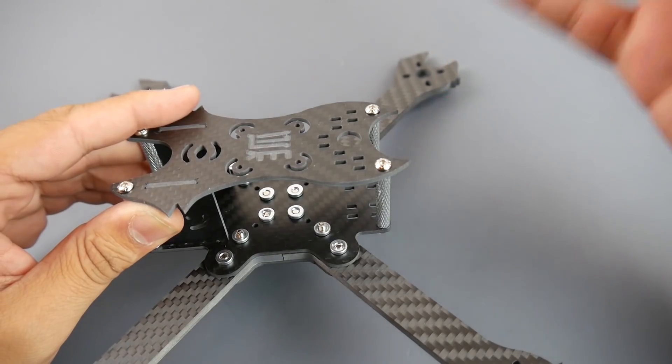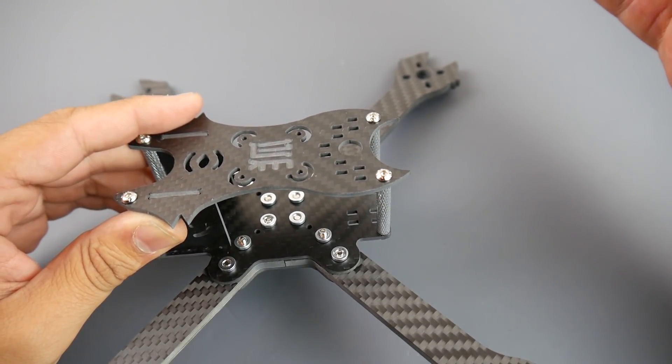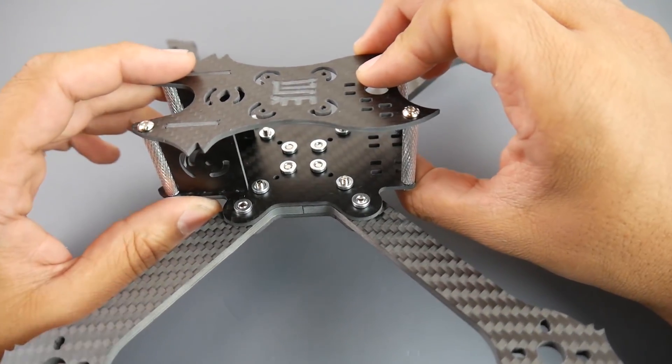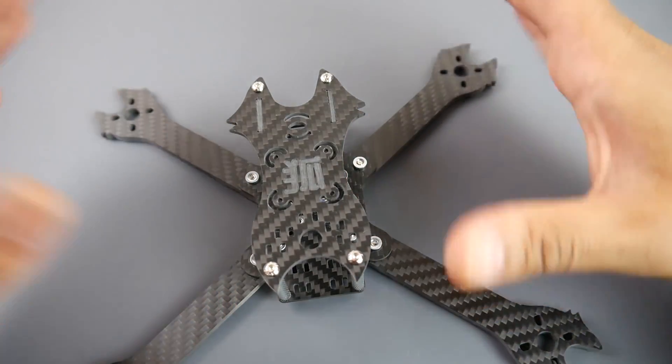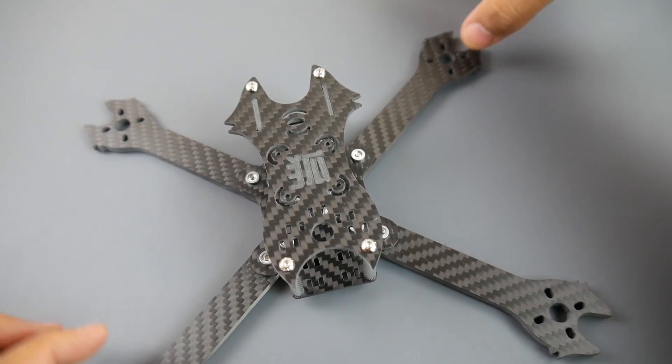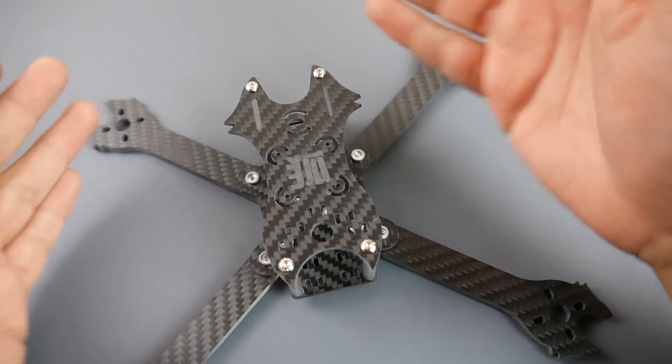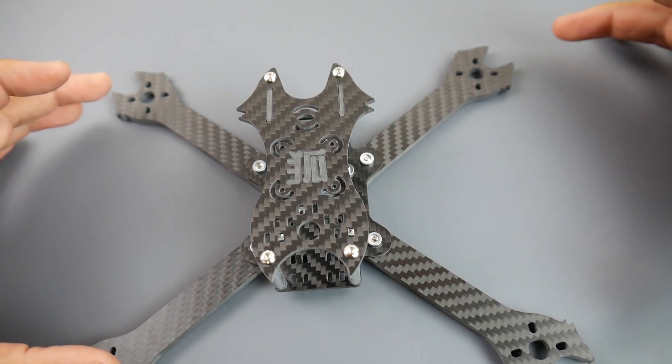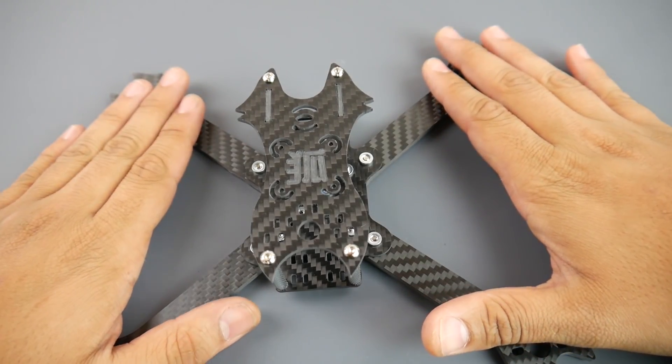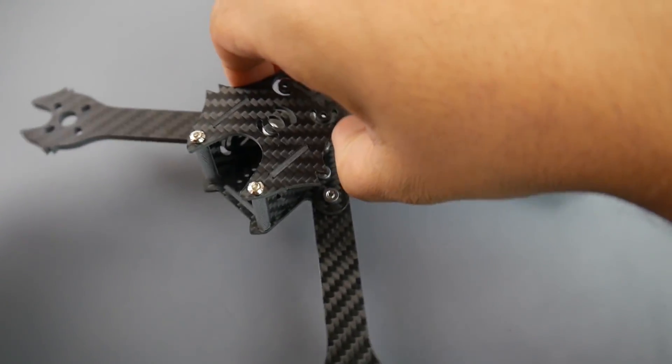This is not a stretched X nor a true X. This is a squashed X, which means these arms are closer together. Stretched X is obviously just stretched, a true X is a true X, and then a squashed X is basically these arms are closer together. They're not stating that anywhere, I had to measure it to figure it out.